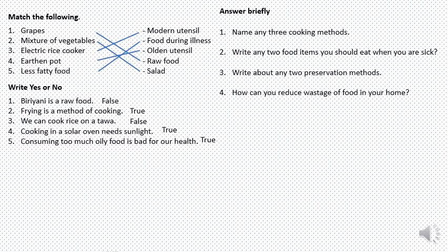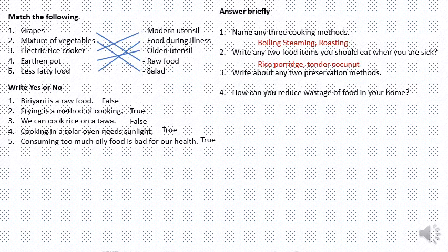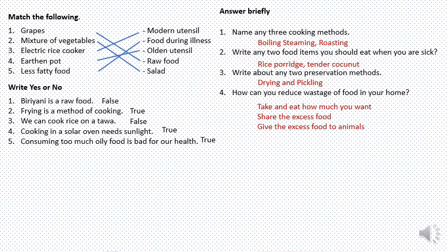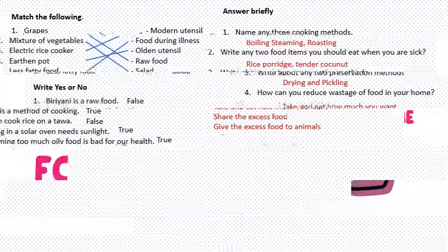Answer briefly. Name any three cooking methods — boiling, steaming, roasting. Write any two food items you should eat when you are sick — rice porridge, tender coconut. Write about any two preservation methods — drying and pickling. How can you reduce wastage of food in your home? Take and eat how much you want. Share the excess food. Give the excess food to animals.